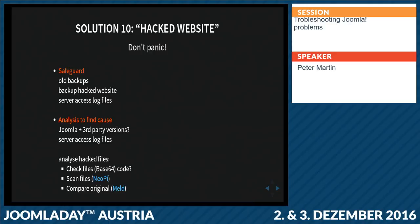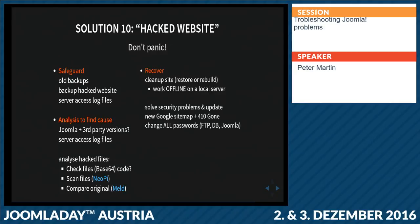Scan your website using Neopi, a Python script that shows lists of the most suspicious files. The best thing is to compare with an original: install a clean Joomla next to the hacked backup on your local machine with the same extensions, and use Meld to compare everything — you'll see all the changes that have been made. Recover on a local machine, not on the server, because the hackers might still be active.